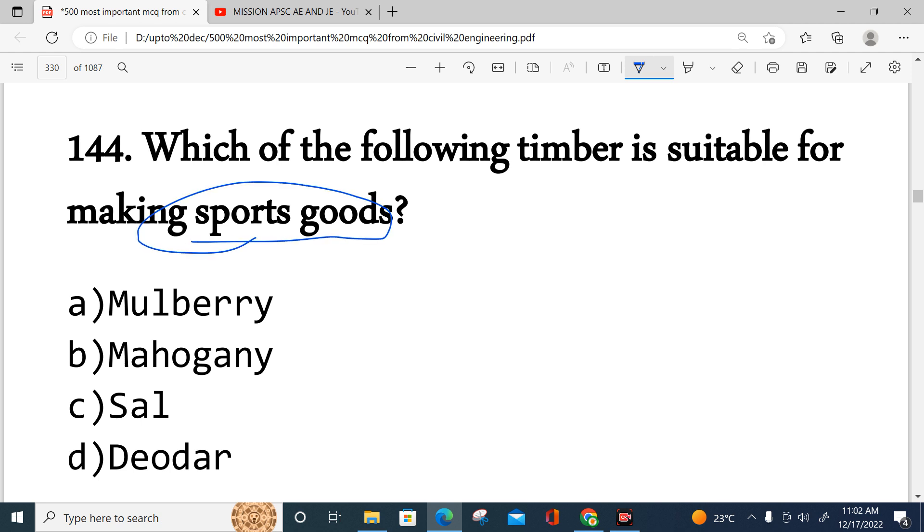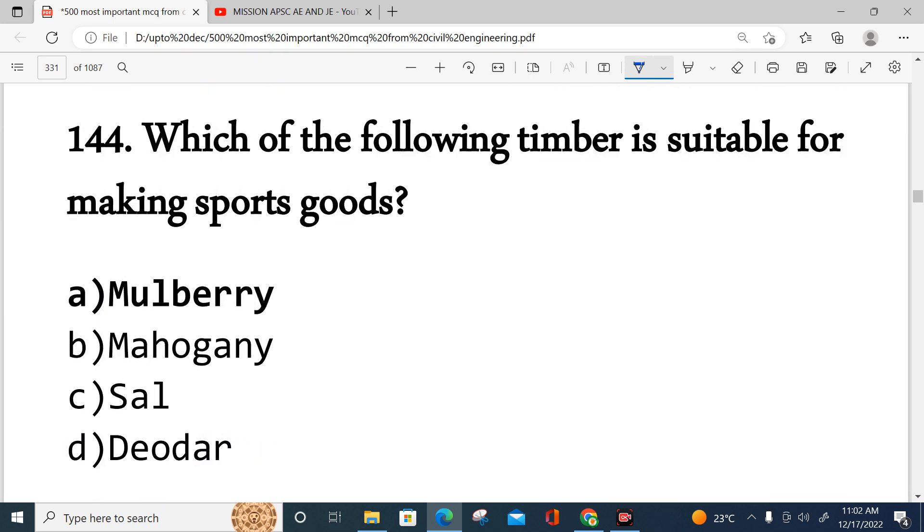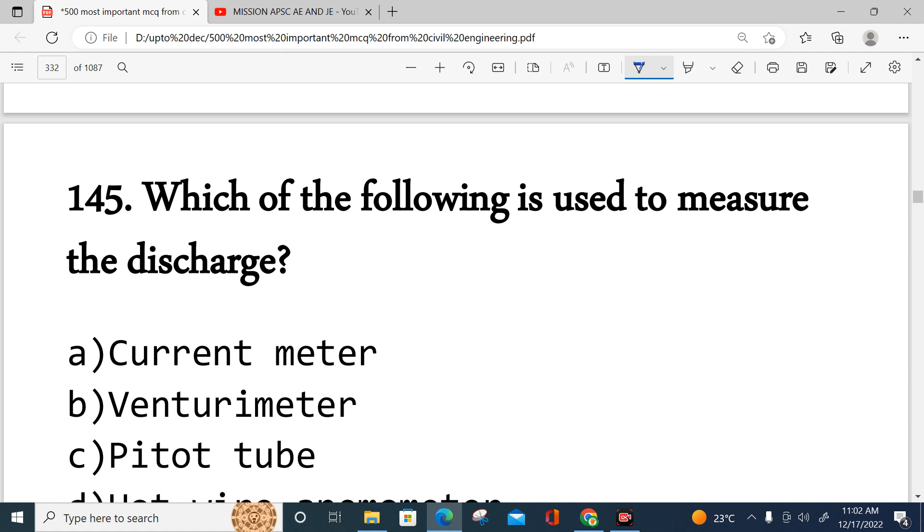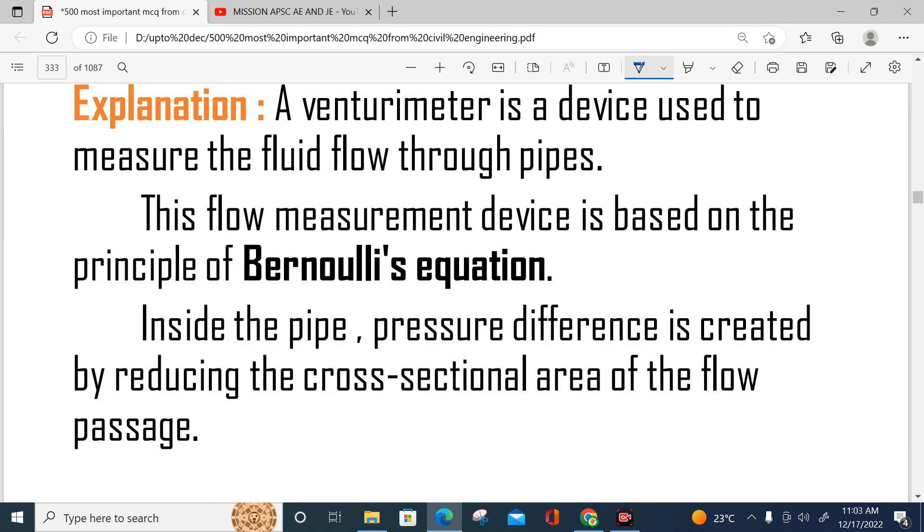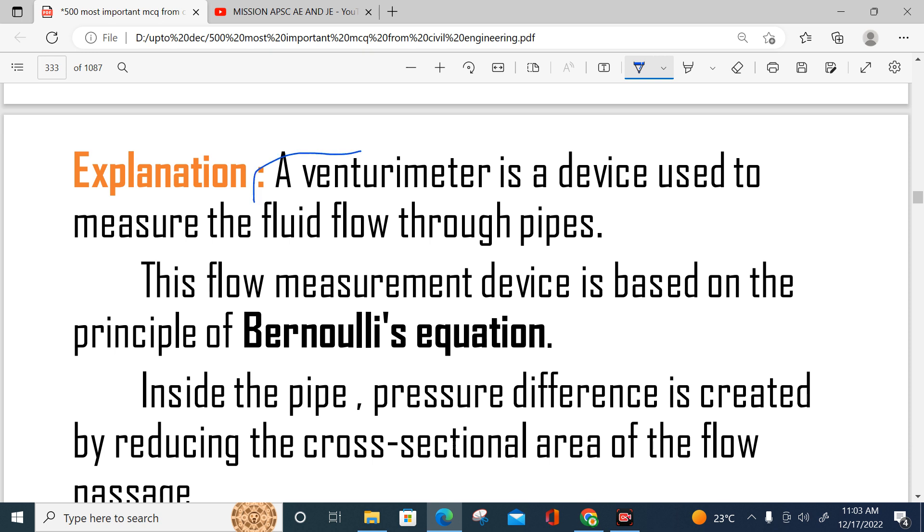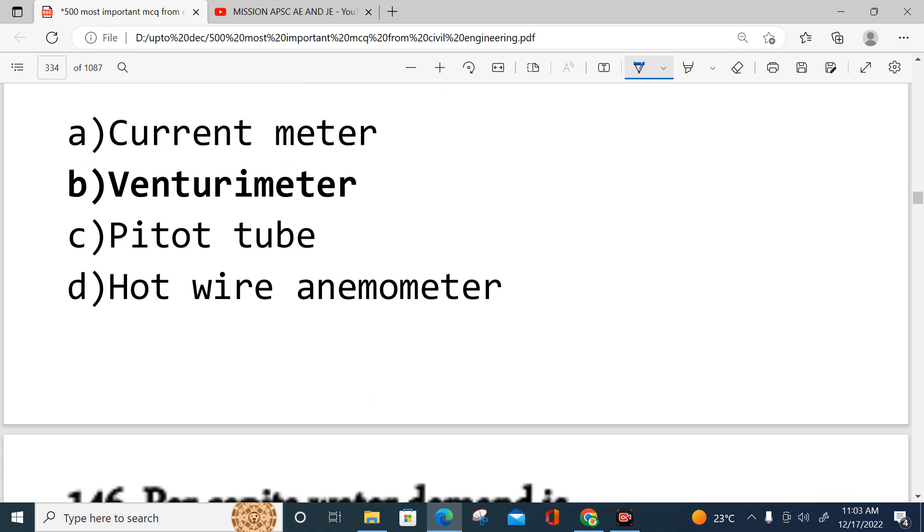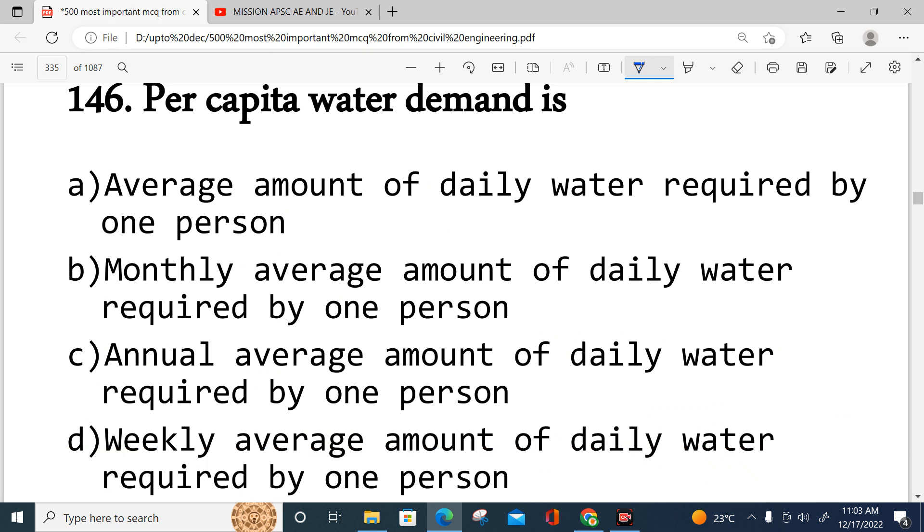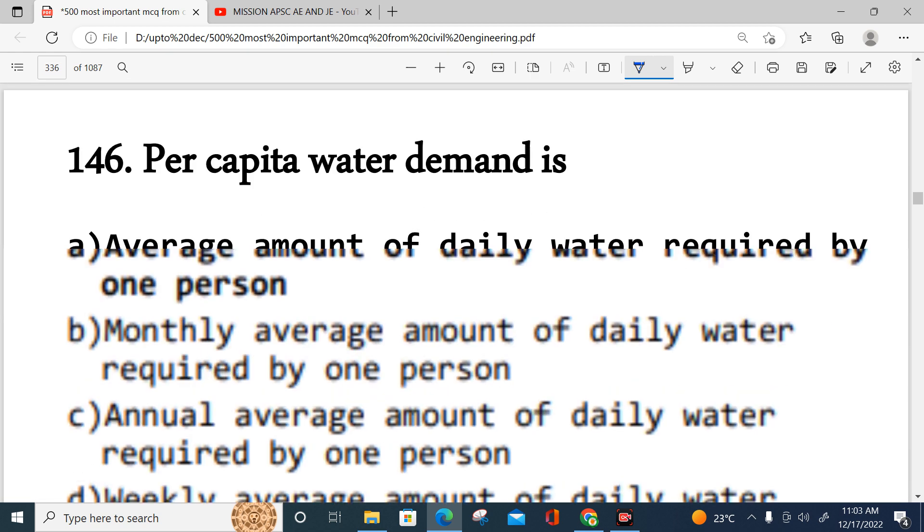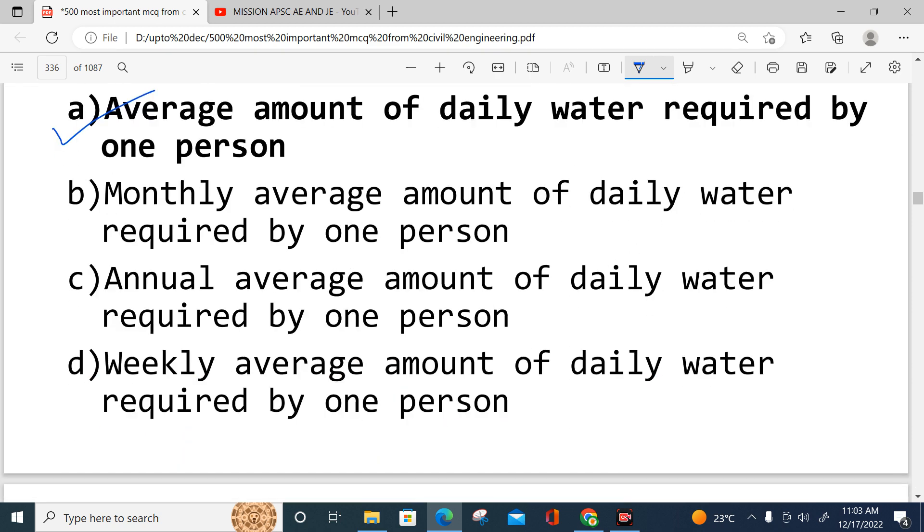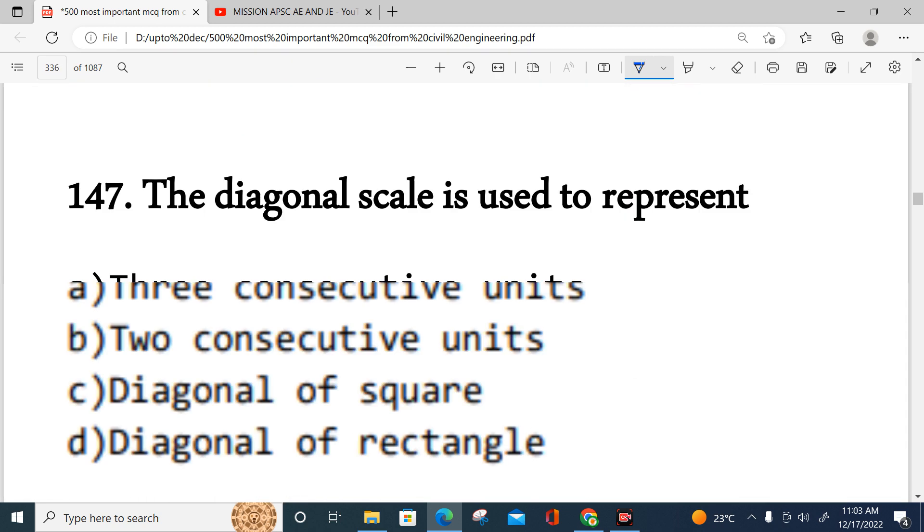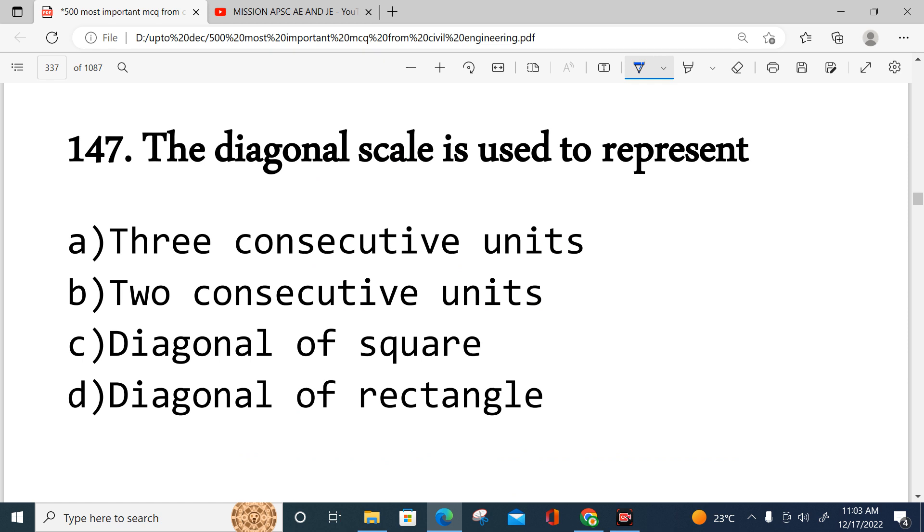Which timber is suitable for making sports goods? The answer is mulberry. Question 145: Which is used to measure discharge? Current meter, venturimeter, pitot tube, hot wire anemometer. Venturimeter is used for fluid flow through pipes based on Bernoulli's equation. Per capita water demand is the average amount of daily water required by one person. The diagonal scale is used to represent three consecutive units.